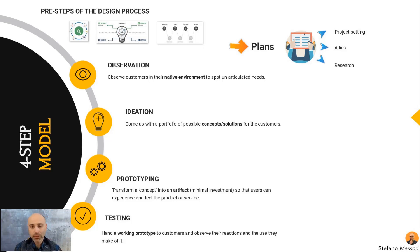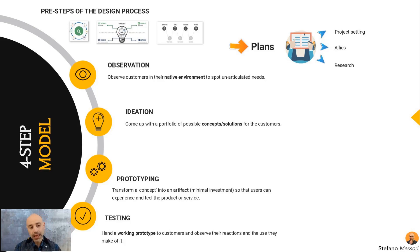Wicked problems are complex — we need to break them down into sub-problems. In order to understand those sub-problems, we need to observe the customer and achieve that understanding of the user that goes beyond data. So that is what I call creating a common mind. Then we use another template to scope the project itself.